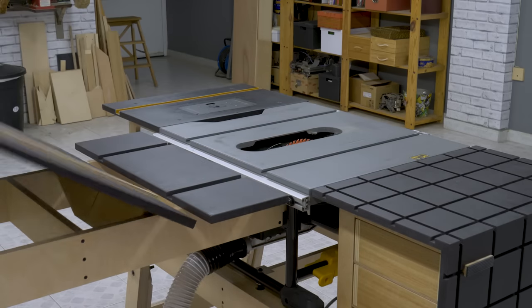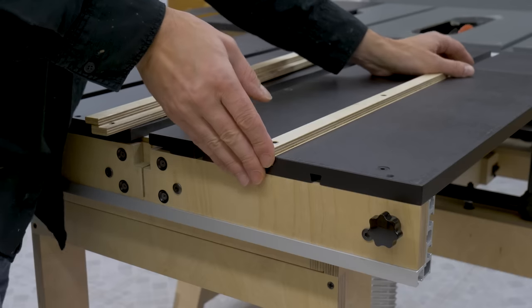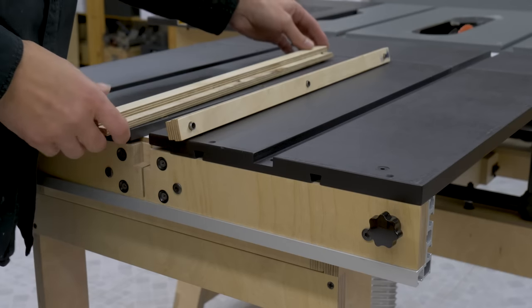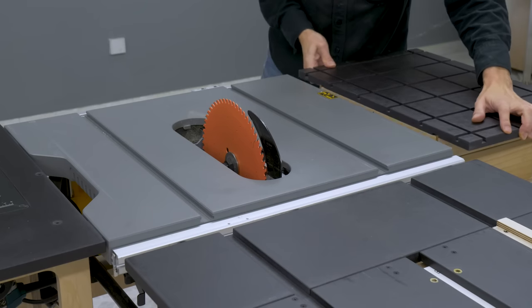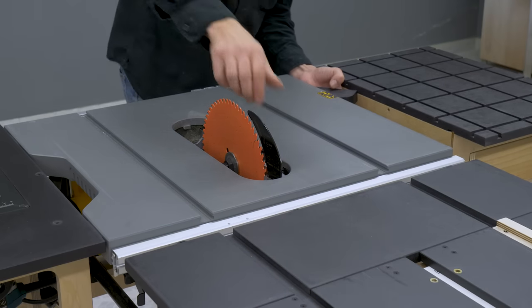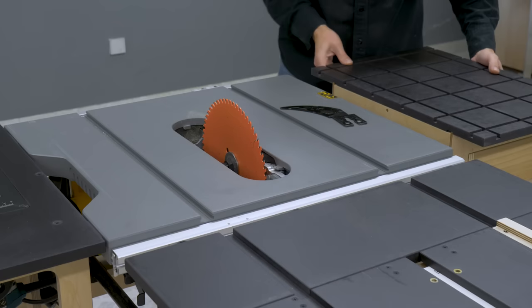Now I'm going to show you why I built another Z-shaped slider. It allows me to move this sled approximately 10 mm to the right, making it possible to use a dado stack. I'm going to change the saw blade.